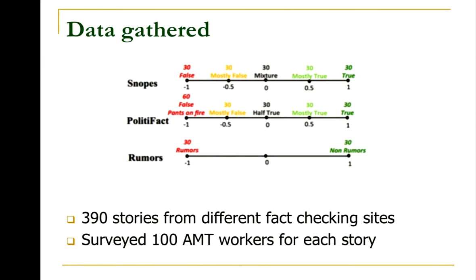The data we gathered for this study: we took three different fact-checking sites — Snopes, PolitiFact, and Rumor — and selected about 390 stories for which we had ground truth data on how true or false they are, labeled on a scale of minus one to plus one. We surveyed 100 Amazon Mechanical Turk workers and asked them to take an implicit truth perception test — we would show them a story and say you have five seconds, don't think too much, don't do a Google search: what's your immediate perception? Do you think it's true or false?